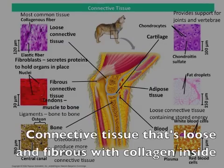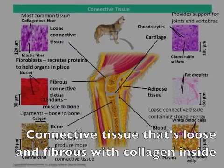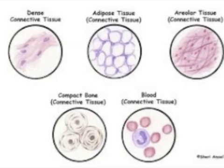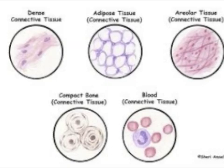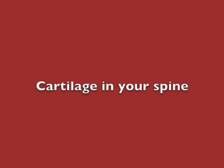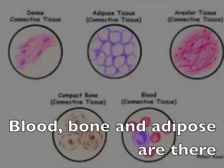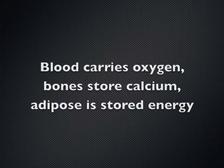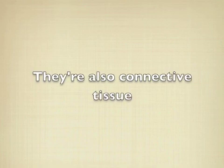Connective tissue is loose and fibrous with collagen. Tendons connect muscles to bones, ligaments connect bone to bone, and cartilage is in your spine. Blood, bone, and adipose are found throughout your body — they are also connective tissues.